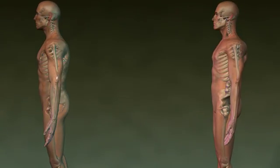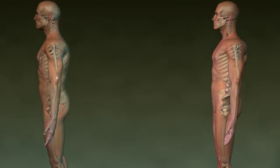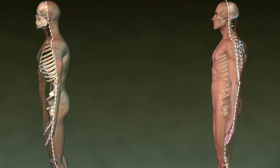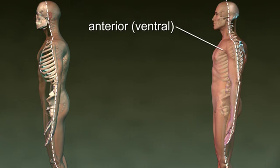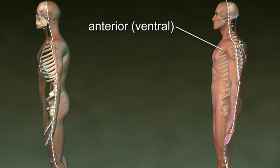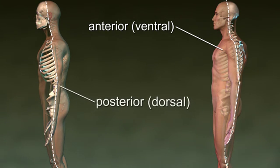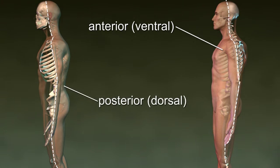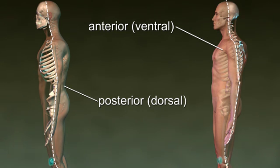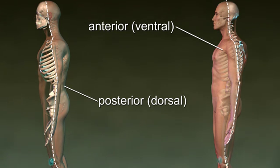Anterior and posterior refer to front and back. Anterior, or ventral, means toward the front of the body. Posterior, or dorsal, means toward the back of the body. The kneecap is on the anterior side of the leg.